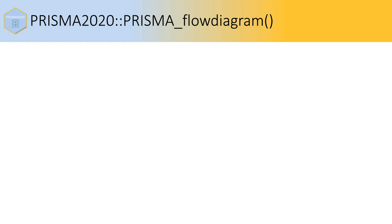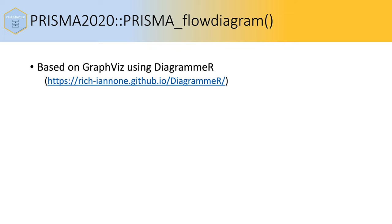The main function is PRISMA flow diagram, and it's based on GraphViz and uses DiagramR. In this language, I use the term nodes for boxes and edges for arrows, and the package automatically connects the boxes with arrows.